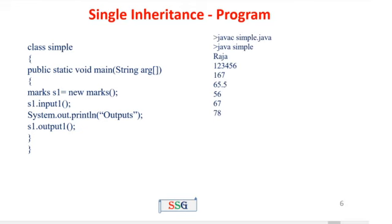To run the program: javac Simple.java, then java Simple. The program first calls s1.input_one() — control transfers to input_one, then to the input function of the base class, which requests the name (e.g., Raja), then register number, height, weight, m1, m2, and m3. Next, System.out.println displays the outputs message. Then s1.output_one() transfers control to output_one, then to the base class output function, which prints name Raja, followed by register number, height, weight, m1, m2, and m3. That's all about single inheritance.